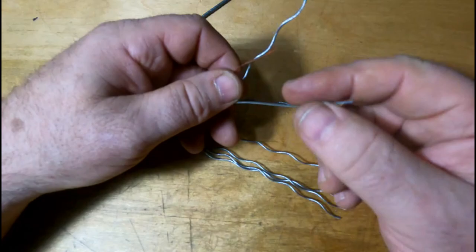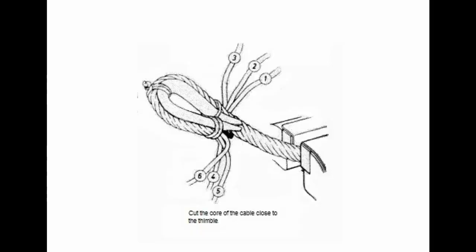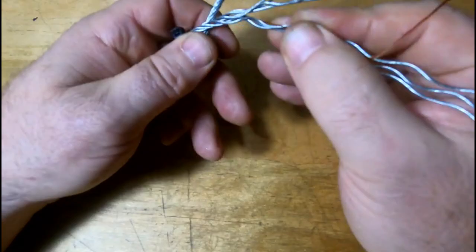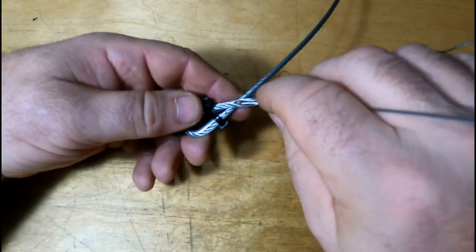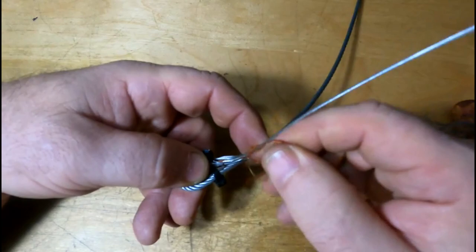You can see the core now is the one that does not—see how this is curved and that one's straight? This is the core piece. The third step would be to trim the core, and you want to cut this as close as possible to the thimble.